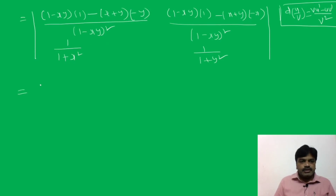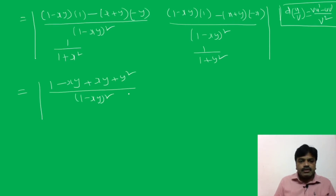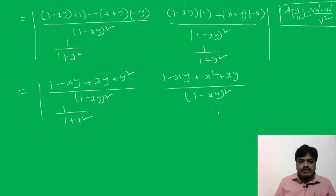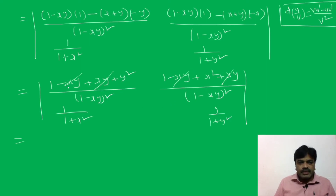Now expand the determinant. First simplify the numerators: for ∂u/∂x, multiplying gives (1 − xy + xy + y²) = (1 + y²) divided by (1 − xy)². For ∂u/∂y, multiplying gives (1 − xy + x² + xy) = (1 + x²) divided by (1 − xy)². The terms −xy + xy cancel. The determinant entries are: [(1 + y²)/(1 − xy)², (1 + x²)/(1 − xy)²; 1/(1 + x²), 1/(1 + y²)].